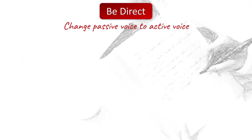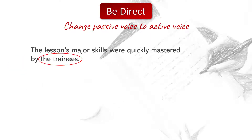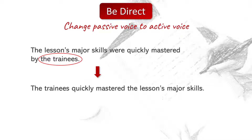Revising passive voice sentences makes them more direct. For example: 'The lesson's major skills were quickly mastered by the trainees.' Place the doer of the action first: 'The trainees quickly mastered the lesson's major skills.' Note that a writer must also delete the verb 'were.'